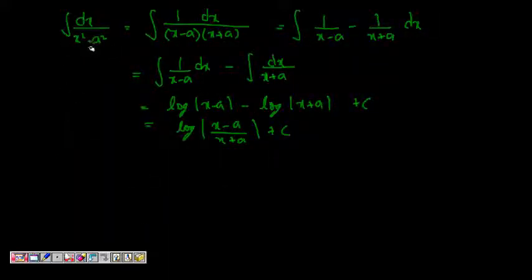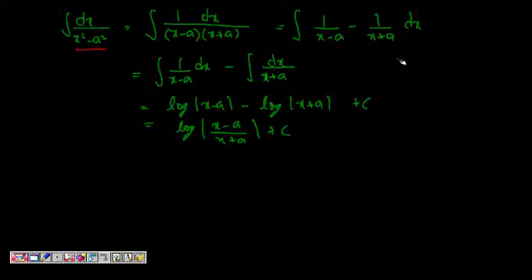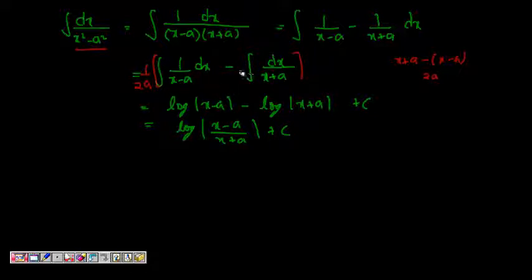The first problem is integral dx by x square minus a square. We can write this as 1 by (x minus a)(x plus a) dx. Using partial fractions, this becomes 1 by 2a times integral of 1 by (x minus a) minus 1 by (x plus a) dx. Integrating, we get 1 by 2a log of (x minus a) by (x plus a) plus c, using the log property that log a minus log b equals log a by b.